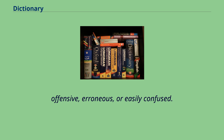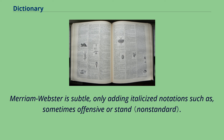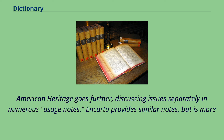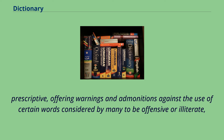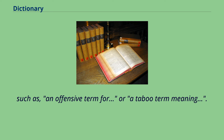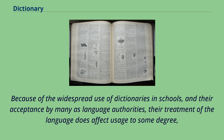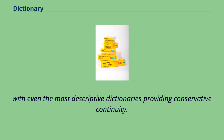Offensive, erroneous, or easily confused. Merriam-Webster is subtle, only adding italicized notations such as 'sometimes offensive' or 'slang.' American Heritage goes further, discussing issues separately in numerous usage notes. Chambers provides similar notes but is more prescriptive, offering warnings and admonitions against the use of certain words considered by many to be offensive or illiterate, such as 'an offensive term for' or 'a taboo term meaning.' Because of the widespread use of dictionaries in schools and their acceptance by many as language authorities, their treatment of the language does affect usage to some degree, with even the most descriptive dictionaries providing conservative continuity.